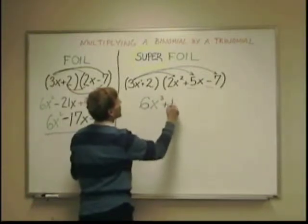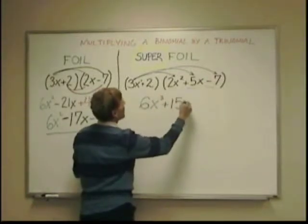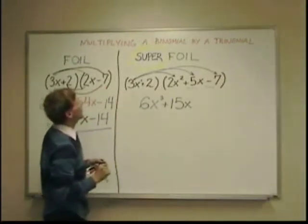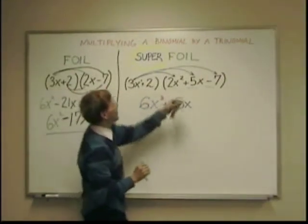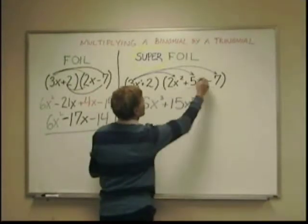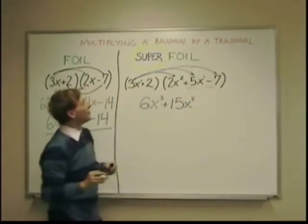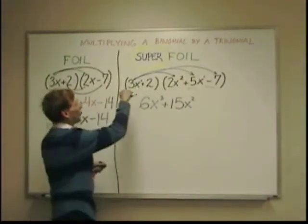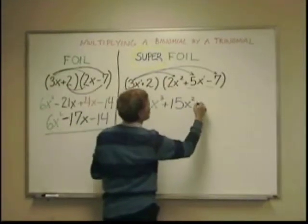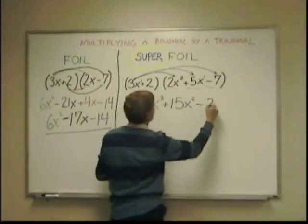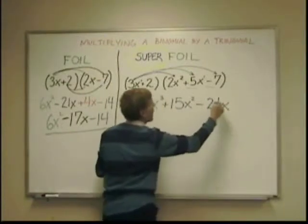Signs are both positive, so it's 15x, which just comes in from there. And x and x is like x¹ and x¹ is x². And now 3x times negative 7 is negative 21x.